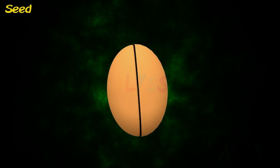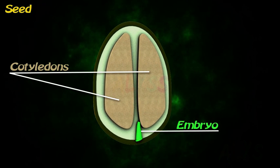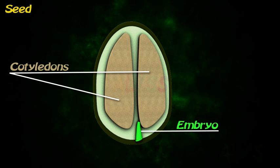Let's see the structure of a seed. It has an embryo, cotyledons, which are stored food as starch and protein for the embryo to grow.